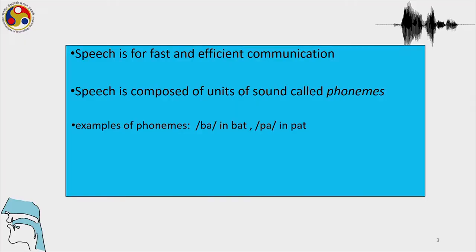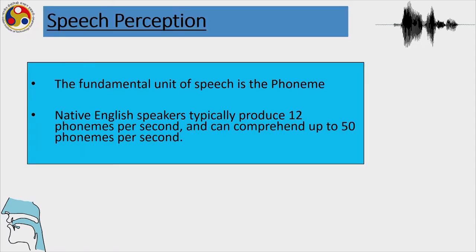As we have seen in the three units before this, speech is for fast and efficient communication and is composed of units called phonemes — for example, ba and bha in any language, or bat and pat in English. The fundamental unit is generally considered to be the phoneme. Native English speakers typically produce 12 phonemes per second and can comprehend up to 50 phonemes per second, which is a very fast rate of recognition as well as production.